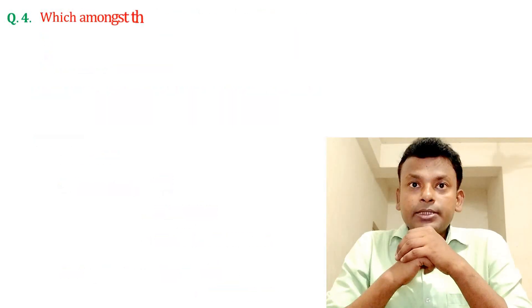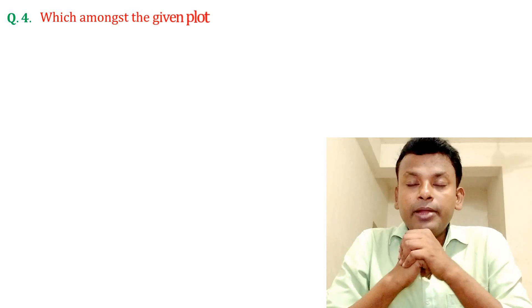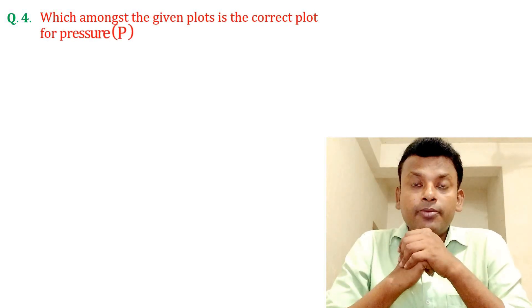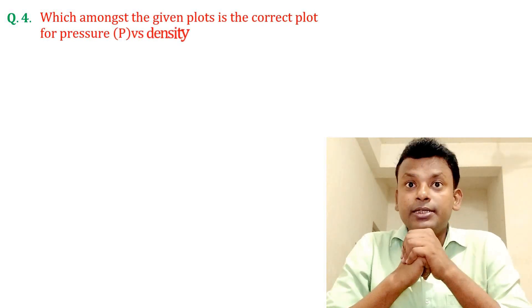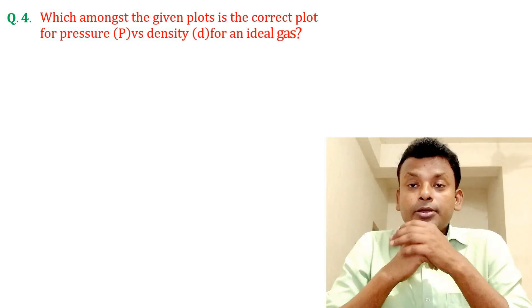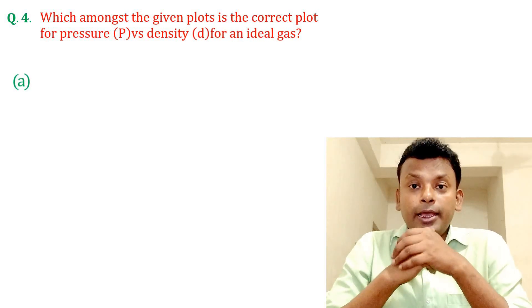Question 4. Which among the given plots is the correct plot for pressure versus density for an ideal gas? Option A, Option B, Option C, Option D.